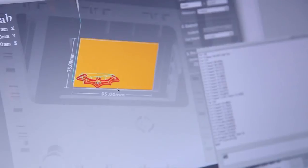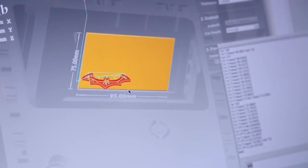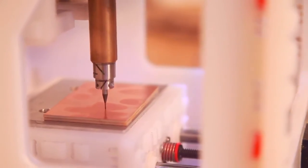It's as simple as taking a board, set it on the bed, load up the board file, position it, and hit go. And then it will cut your board out.